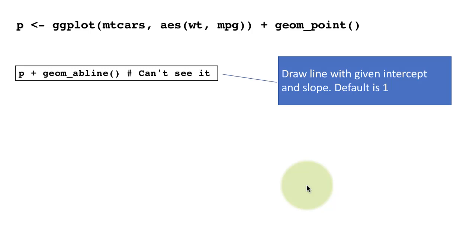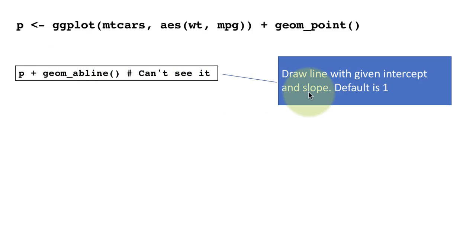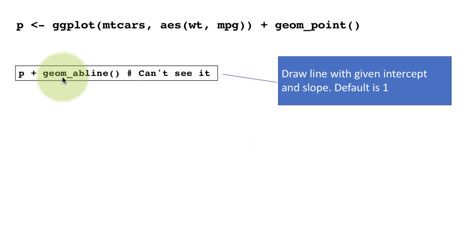Here we use geom_abline, a concept that existed in base R graphics and is called geom_abline in ggplot. An abline is created with a slope and an intercept. The intercept is where the line cuts the y-axis, and the slope is rise over run. The default slope is 1 and the default intercept is 0, so calling geom_abline with defaults should show the 45-degree line if both axes are scaled identically.